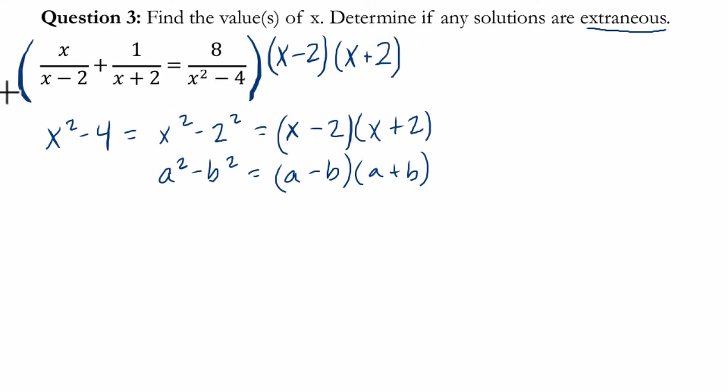So how does that work out for us? In the first fraction, we will get x times x minus 2 times x plus 2 over x minus 2. And x minus 2 divides to 1. What we're left with is x times x plus 2. That's the first fraction.